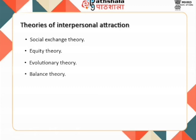According to the balance theory, when two people like one another and find out that they are similar to each other in some way, this leads to a state of balance which is emotionally pleasant, and vice versa. When they discover that they are dissimilar, they try to achieve balance by trying to change oneself or the other person, either by misperceiving the dissimilarity or by disliking each other.